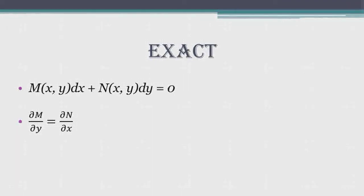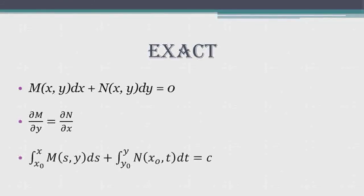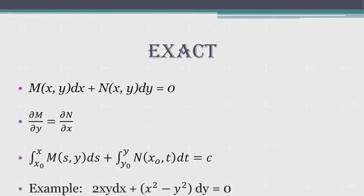If that condition is true, then the differential equation is exact, and there is a method of finding the solution. For example, if the partial derivative of M with respect to y is 2x, and the partial derivative of N with respect to x is also 2x, then 2x equals 2x — that means this equation is exact.